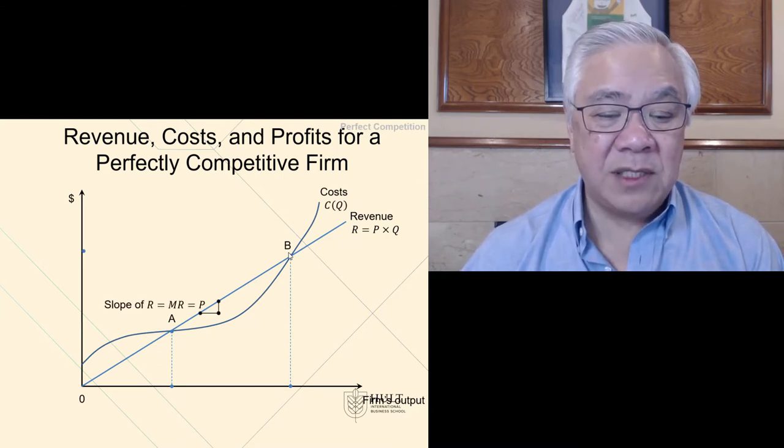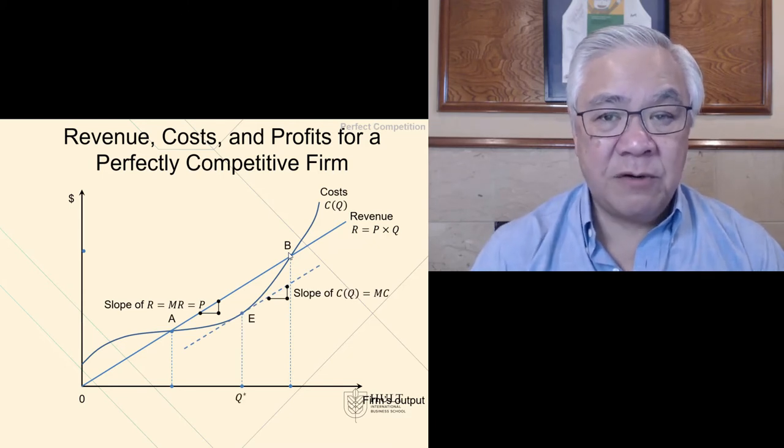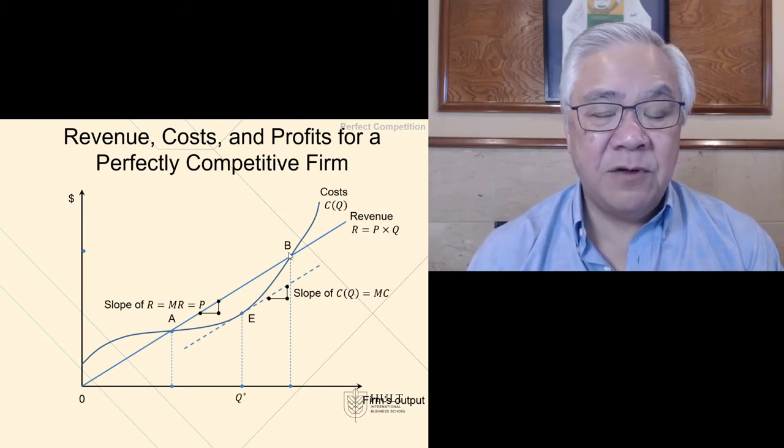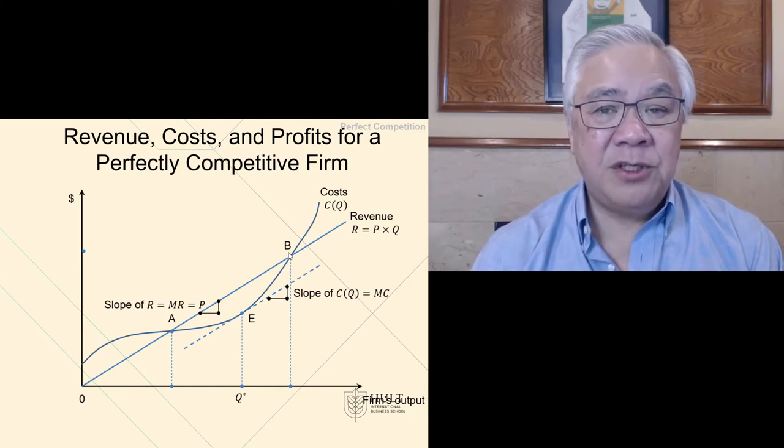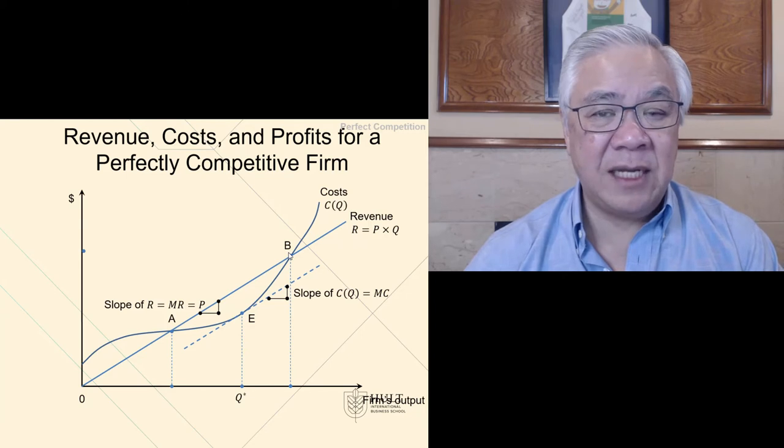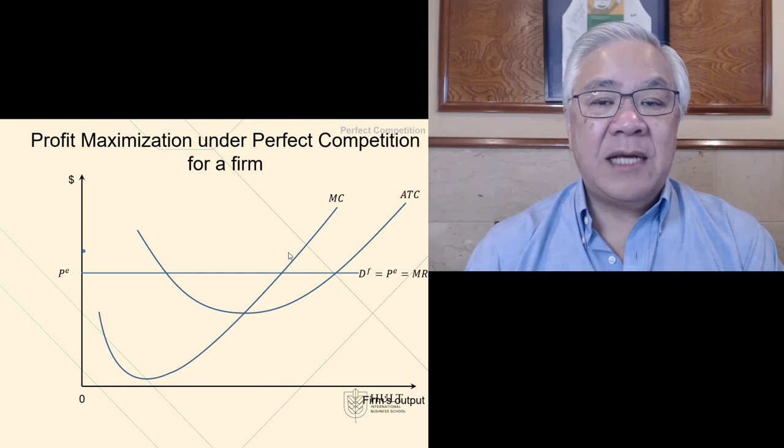Now, you don't want to be at either one of these points. Where you want to be is where the slope of the cost curve equals the slope of your revenues, namely your price. And that is the point at which you maximize your profits. So that is how firms decide on the quantity that they will produce.